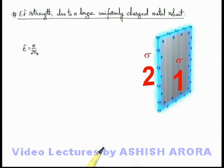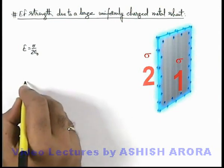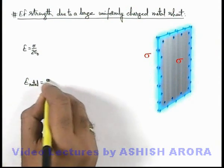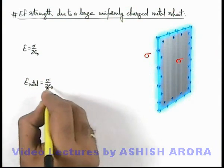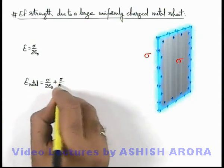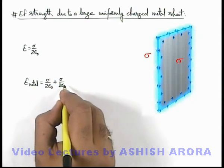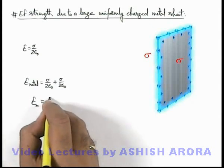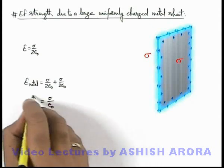So in front of it, at a point if we wish to calculate the electric field, you can simply state: electric field due to a metal sheet is given by sigma by 2 epsilon not due to one surface, plus sigma by 2 epsilon not due to the other surface. So net electric field due to a metal sheet can be given as sigma by epsilon not.